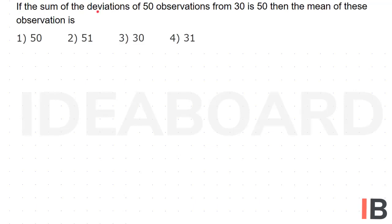If the sum of the deviations of 50 observations from 30 is 50, then the mean of these observations is.